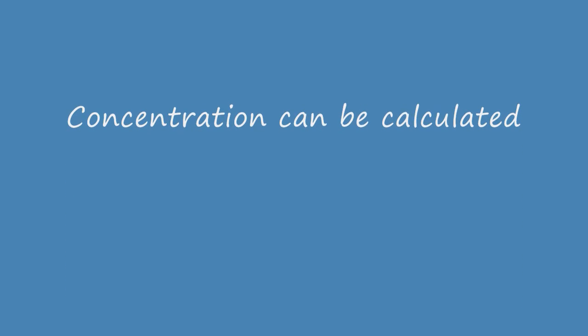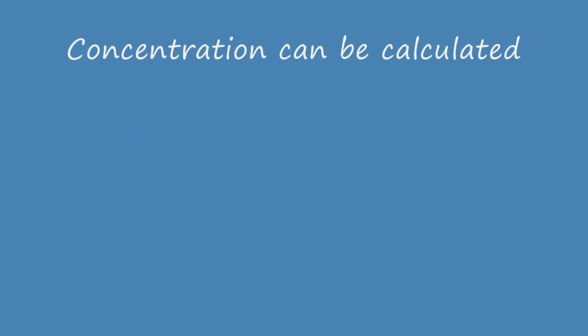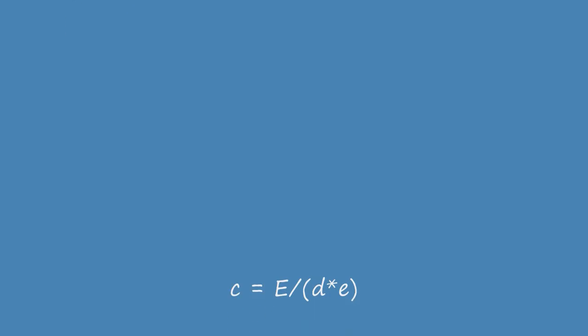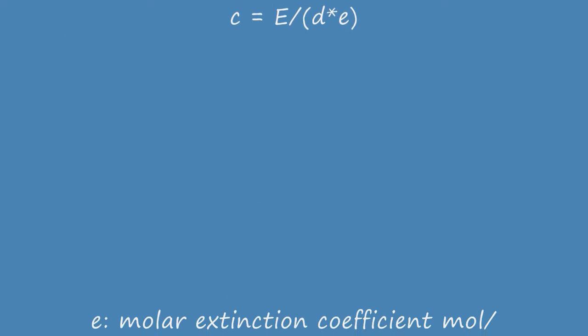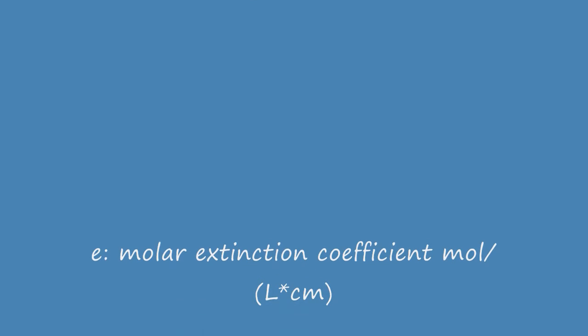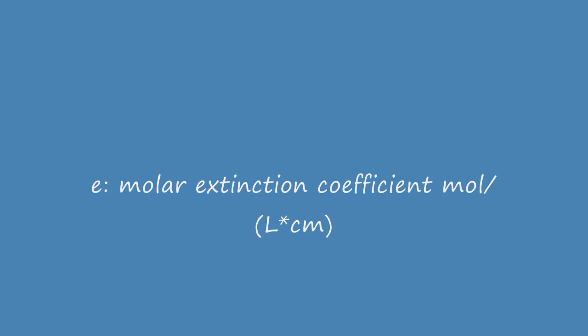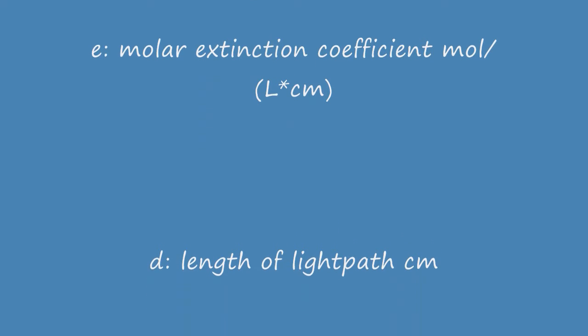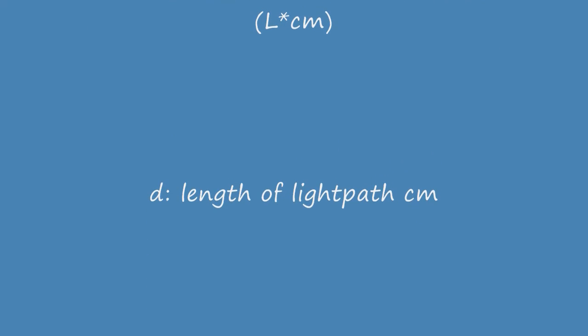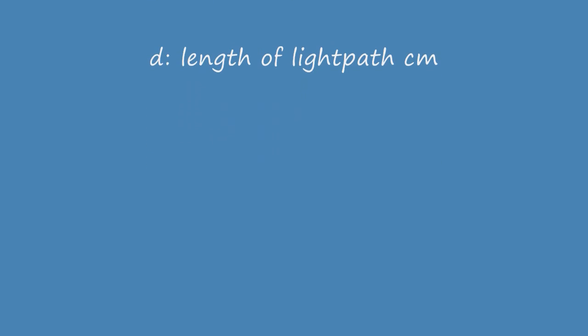So the concentration of a solution can always be calculated by the formula: the concentration is the extinction divided by the molar extinction coefficient times the length of the light path, and what you can end up with is a concentration.